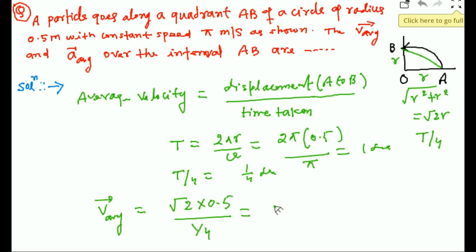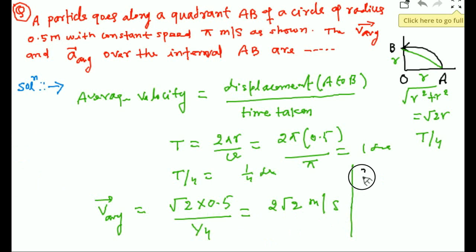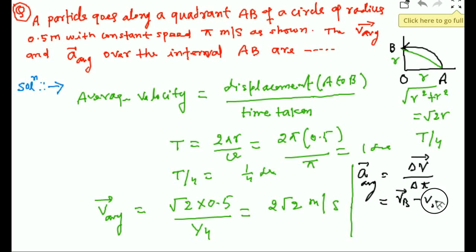This gives √2 meters per second. For the second part, find the average acceleration. Average acceleration equals the change in velocity divided by the time taken. So it is velocity at B minus velocity at A, divided by T/4.